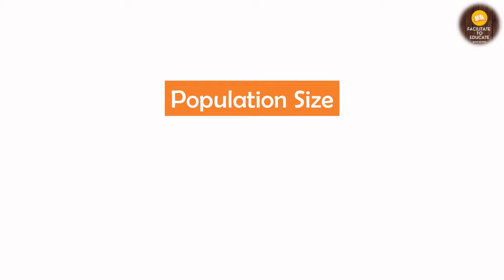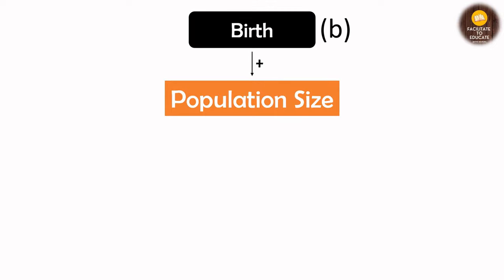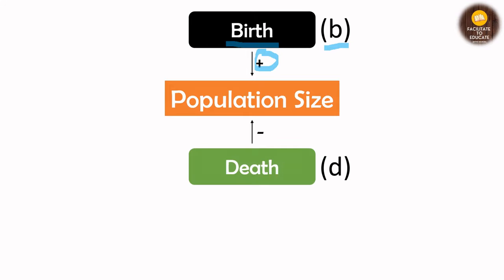Now, the population size depends on certain factors. First is birth — because of birth the population size will increase. We represent birth by small 'b'. If more births are taking place, the population size will increase. If deaths are happening and organisms are dying, then it will result in a reduction in the population size.